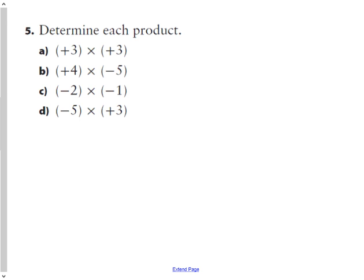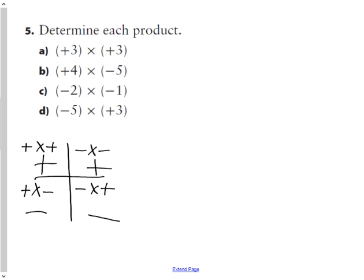Question five says simply determine each product, and we know our sign rules for products and division. If the signs are the same, like positive times a positive or negative times a negative, our products will be positive for both of those. And if we're multiplying opposite integers, we will have a negative product. So we could just do A, B, C, and D without looking at the signs. 3 times 3 is 9, 4 times 5 is 20, 2 times 1 is 2, and 5 times 3 is 15. Same signs will be positive 9, different signs will be negative 20, same signs will be positive 2, and different signs will be negative 15.